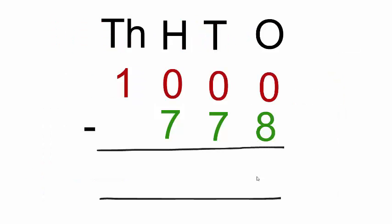Right here we have 1000 minus 778. The place value chart has also been provided. Look carefully at the ones place. Can you take away 8 from 0? So go to the next house.